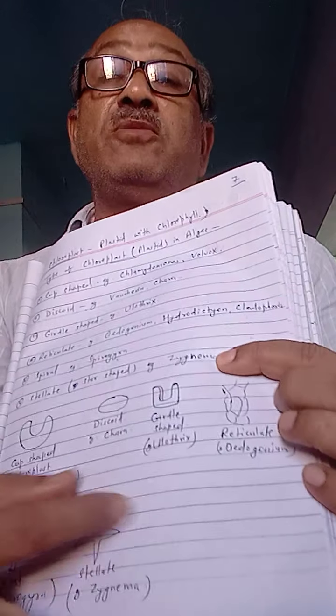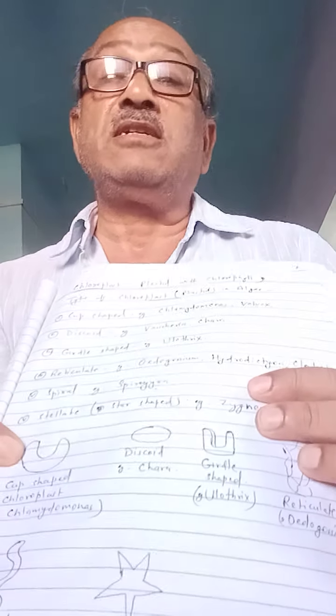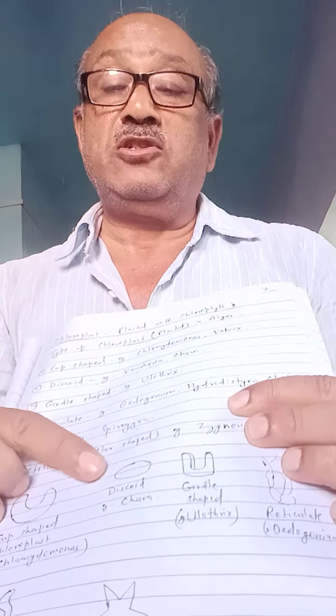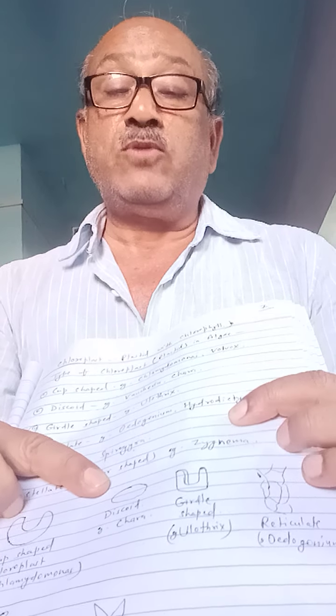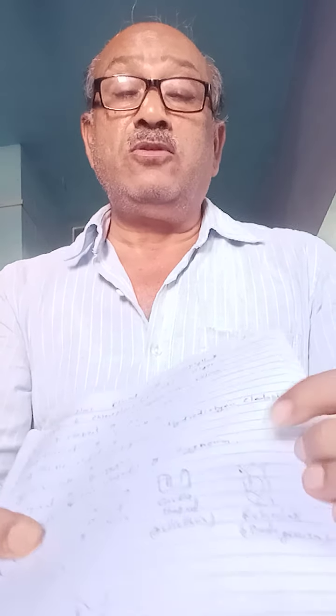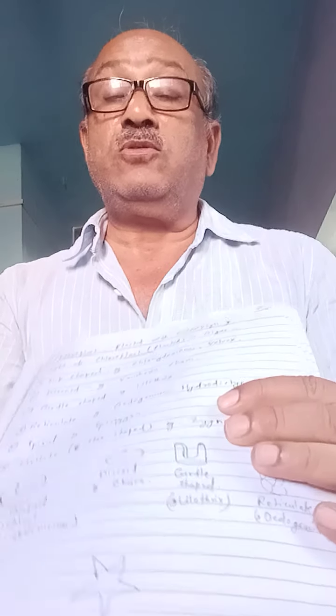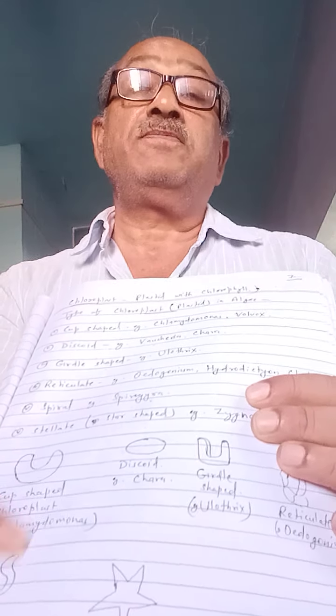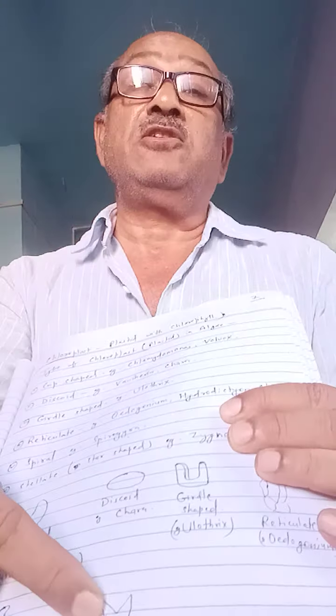Spirogyra is named after the presence of spiral chloroplasts. Stellate, that is star-shaped, chloroplasts are present in Zygnema. This is the figure related with different types of chloroplasts: cup-shaped, discoid, girdle, reticulate, spiral, and stellate chloroplasts.